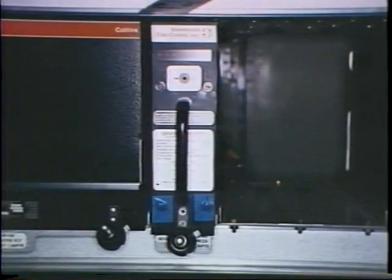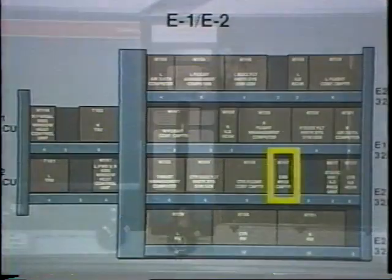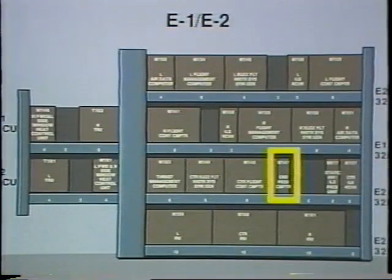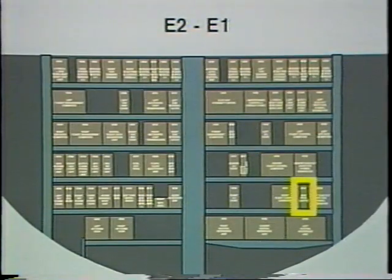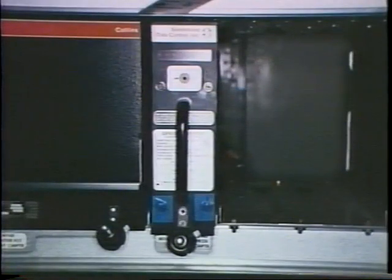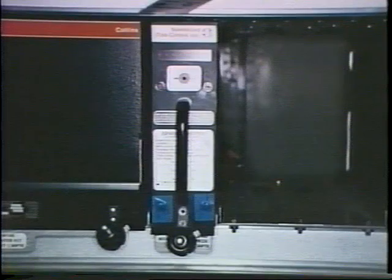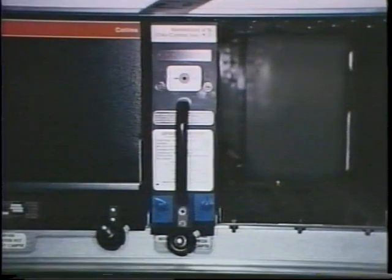An unsafe flight condition is determined by the ground proximity warning computer. This computer is in the main equipment center, on the E2 rack on the 757 and on the E1 rack on the 767. The ground proximity warning computer calculates the warning and advisory mode conditions with incoming signals from interfacing systems.